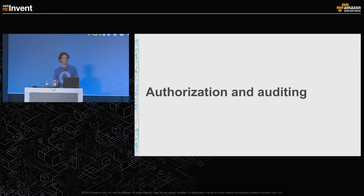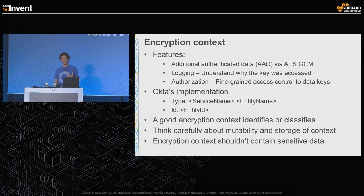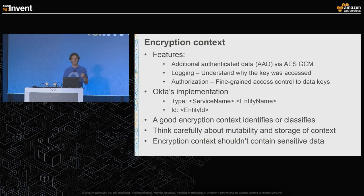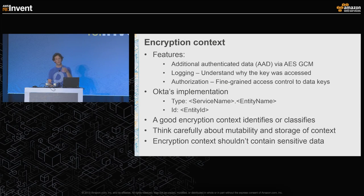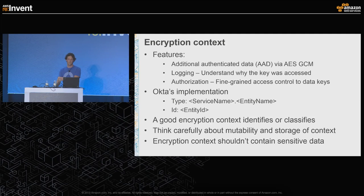Now let's talk about authorization and auditing. The critical part is the encryption context. The KMS API is very simple — we only use three operations: encrypt, decrypt, and generate data key. All three of those operations allow you to provide encryption context. It's additional data that's both used in the encryption algorithm and also used when logging. So how do you come up with what your encryption context should be?